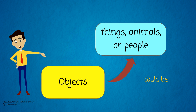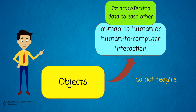Objects could be things, animals, or people. They do not require human-to-human or human-to-computer interaction for transferring data to each other.